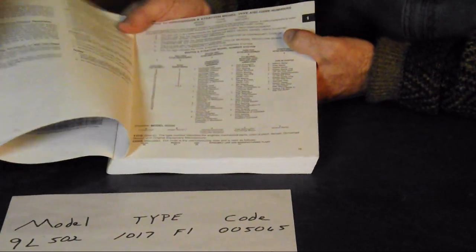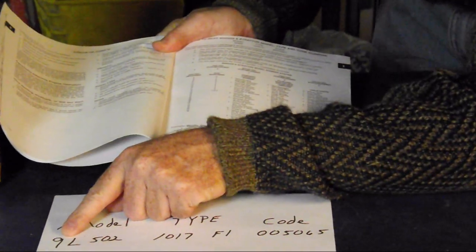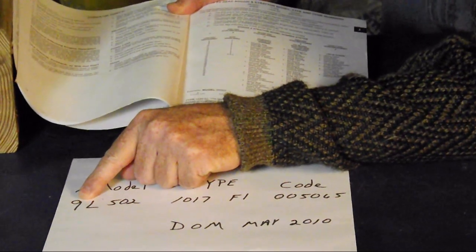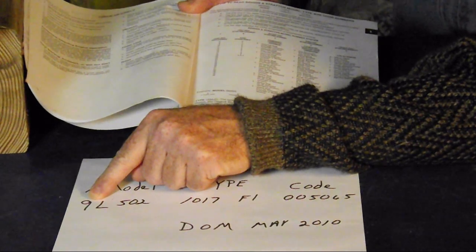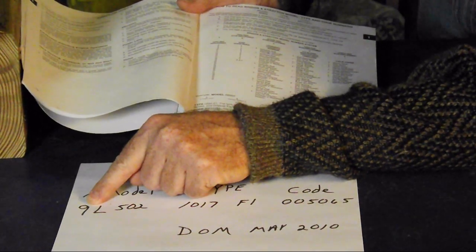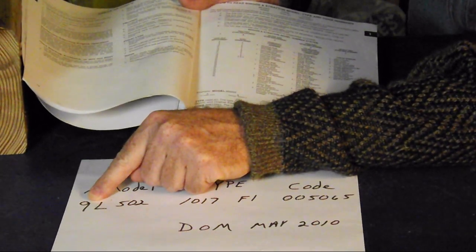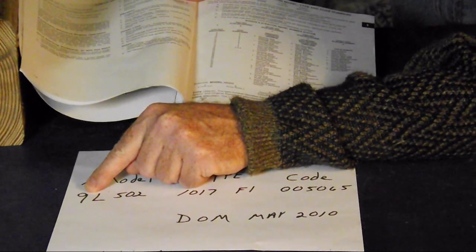And the first number is telling us the size of our engine in cubic inches. And it's a 9 cubic inch displacement. Now the larger that number is, the more powerful that engine is.